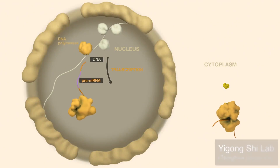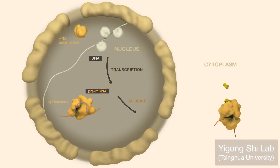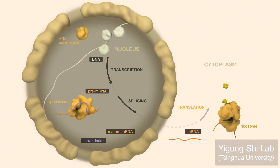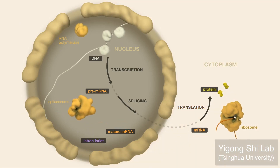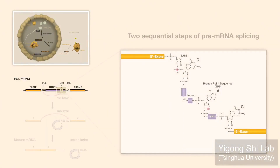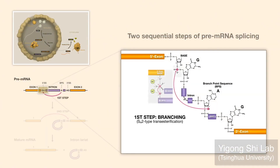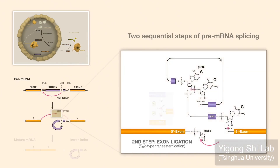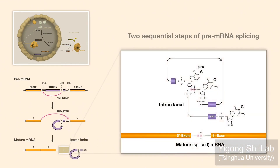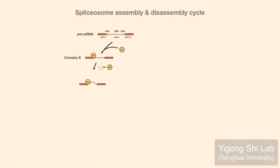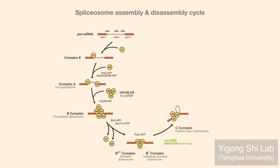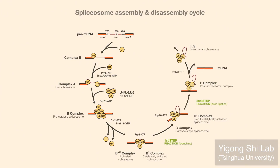Pre-messenger RNA splicing, the removal of non-coding introns, is a central step in gene expression. Abnormal splicing is increasingly implicated in numerous human diseases. Splicing is a two-step reaction and involves conserved RNA residues of the branch point sequence and the 5' and 3' splice sites found in the intron between two exons that will become part of the mature messenger RNA. Highly dynamic spliceosome machinery assembles in an orderly fashion and catalyzes each two-step splicing reaction.